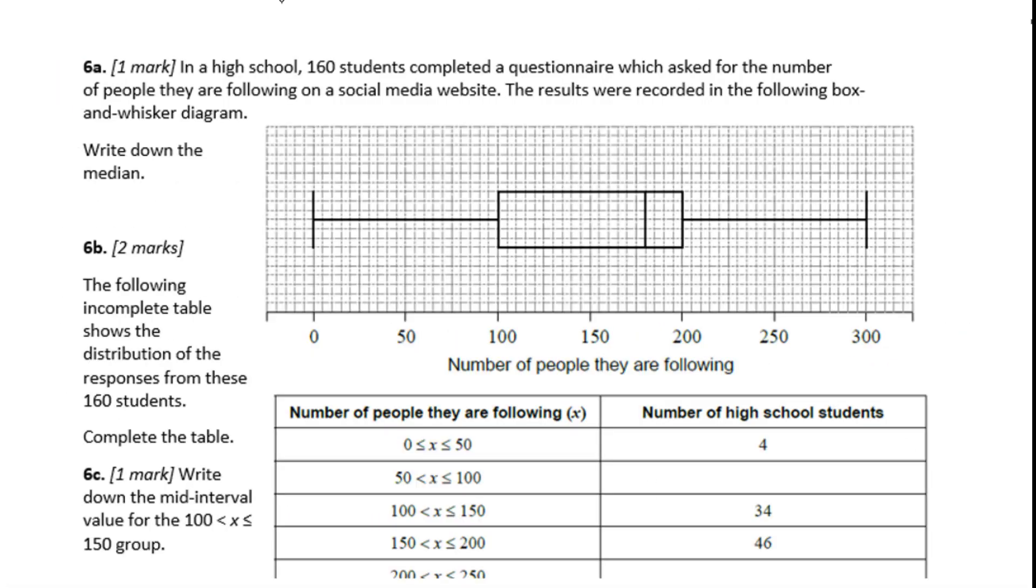Let's go to 6A. In a high school, 160 students completed a questionnaire which asked for the number of people they are following on a social media website. The results were recorded in the following box and whisker diagram. Write down the median. 0 to 50, here is 1, 2, 3, 4, 5, 6, 7, 8, 9, 10.